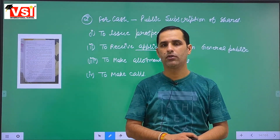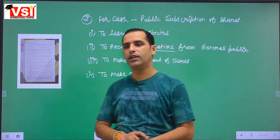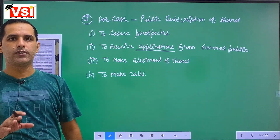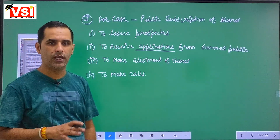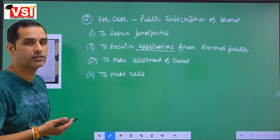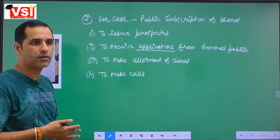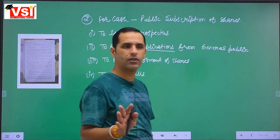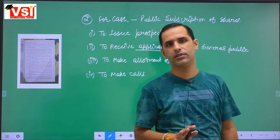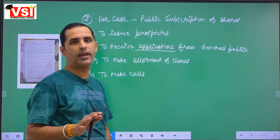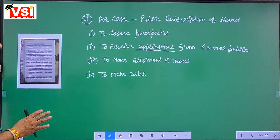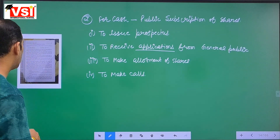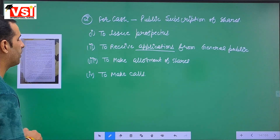The prospectus will also specify on which date the offer opens and on which date it closes. For example, if the offer opens on 1st January 2021, applications can be submitted from that date. If the offer closes on 5th January, then by 5th January within working hours you must submit your application — you cannot apply on 6th January.